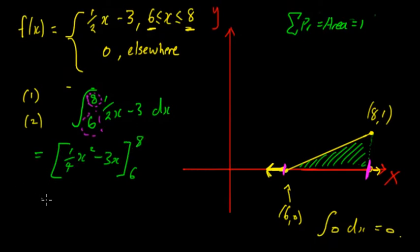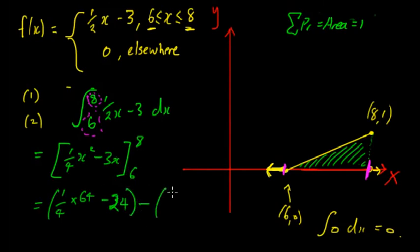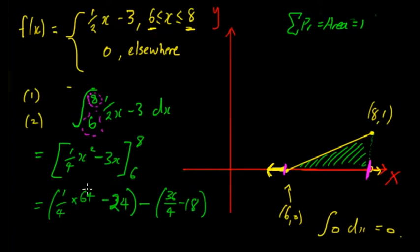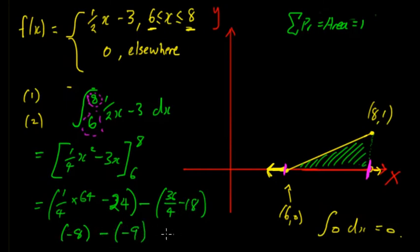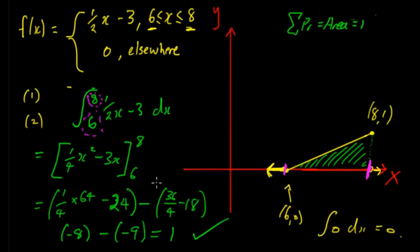Evaluating: 64/4 = 16, so 16 − 24 = −8. Then 36/4 = 9, so 9 − 18 = −9. Subtracting: −8 − (−9) = 1. The total area equals one, and the function is never negative on this domain, so this function does satisfy the conditions to be a probability density function. Note: in exam questions you don't need to verify this unless asked.